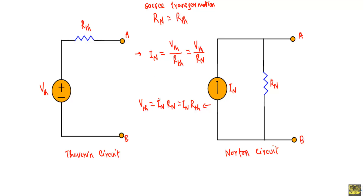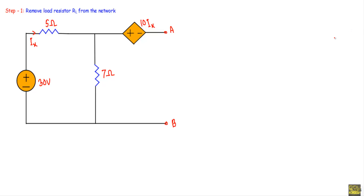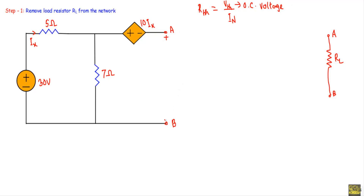In both cases we apply source transformation theorem. So while solving circuits with dependent sources, we use Rth = Voc / In, where Voc is the open circuit voltage, to calculate the Norton resistance. The first step is to remove the load resistor RL across A and B terminals.